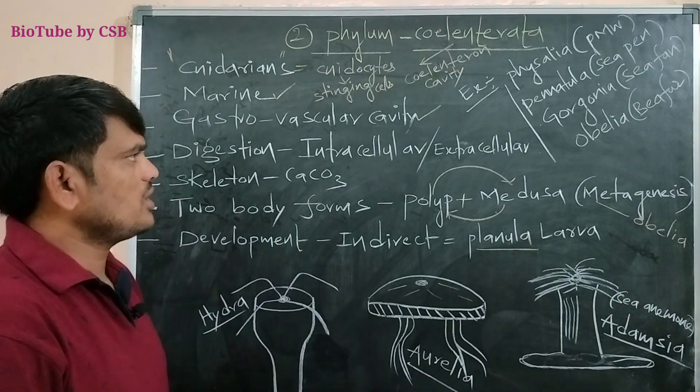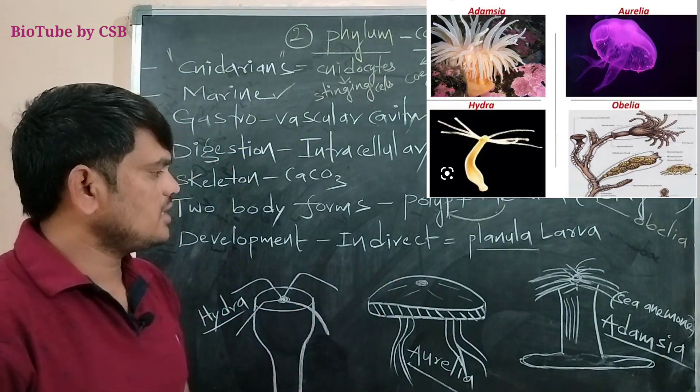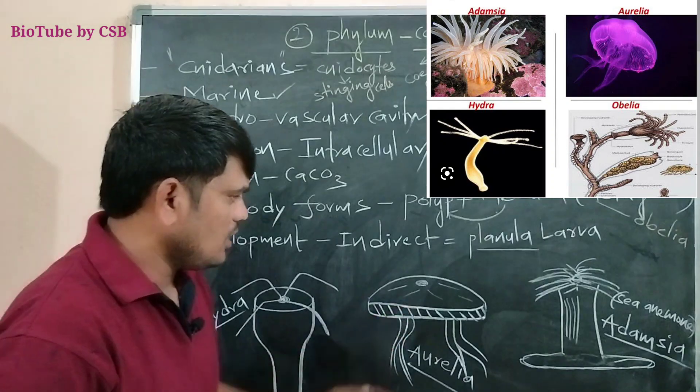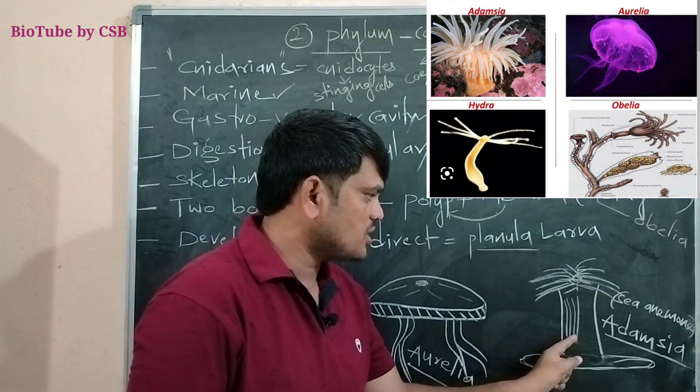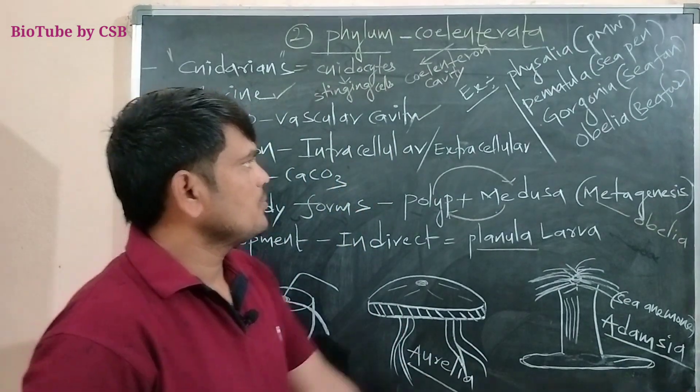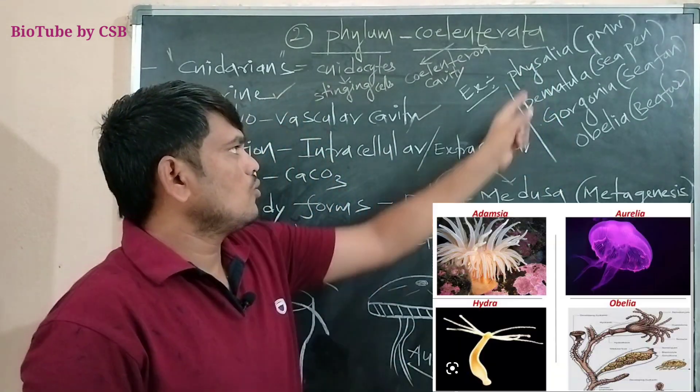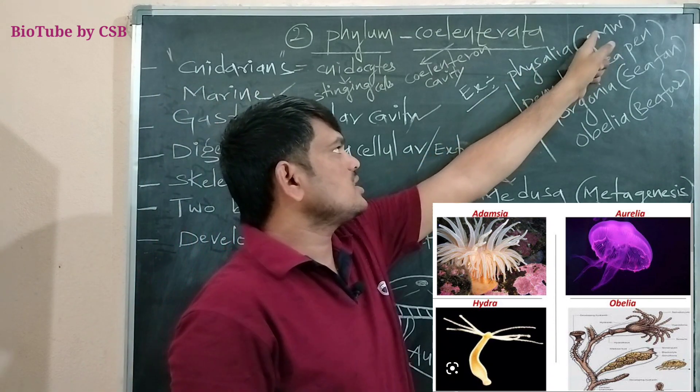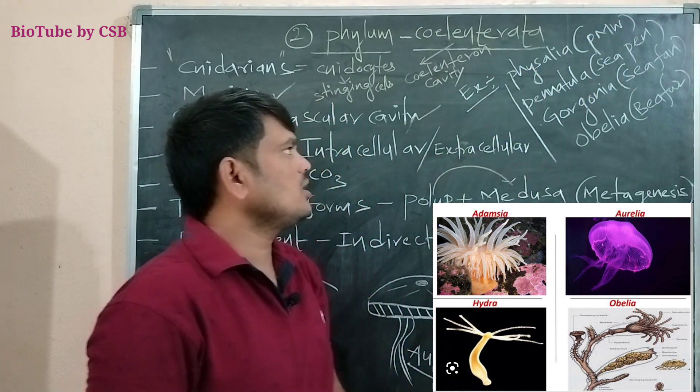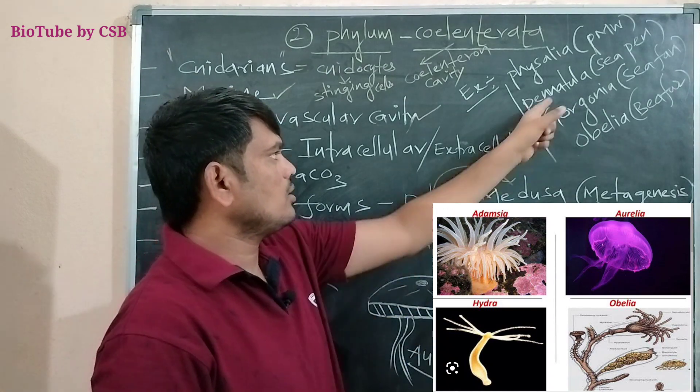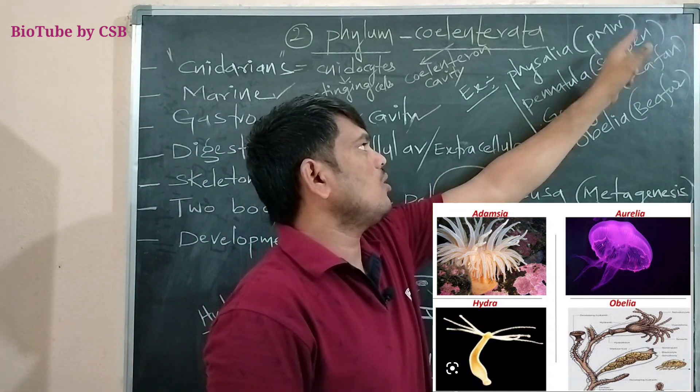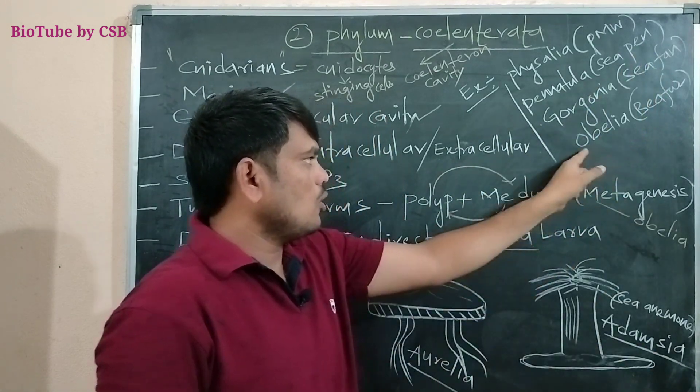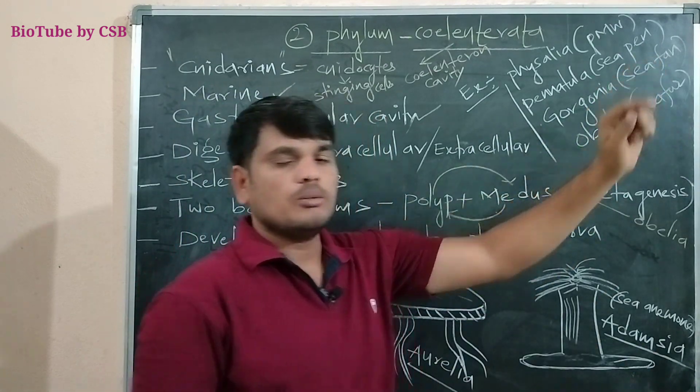So, let me give the suitable example for this phylum Coelenterata. One is Hydra. This one is Aurelia. This one is Adamsia, also called sea anemone. Here, Physalia. Some more examples here. Physalia, Portuguese man of war. It is commonly called Portuguese man of war. Pennatula, commonly called sea pen. Gorgonia, commonly called sea fan. Obelia, commonly called sea fur.